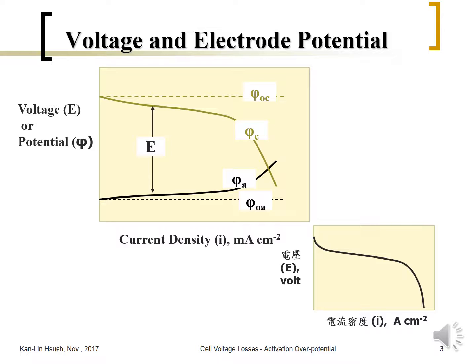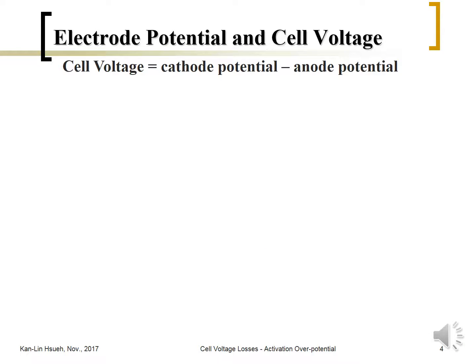There are many different kinds of cell voltage loss situations. In this unit we'll talk about activation overpotential, which is simply due to electrokinetics. The cell voltage is equal to the cathode potential minus the anode potential, written as E_cell = φ_c − φ_a. From the previous unit, we can express those electrode potentials as a function of current density using the Tafel equation.